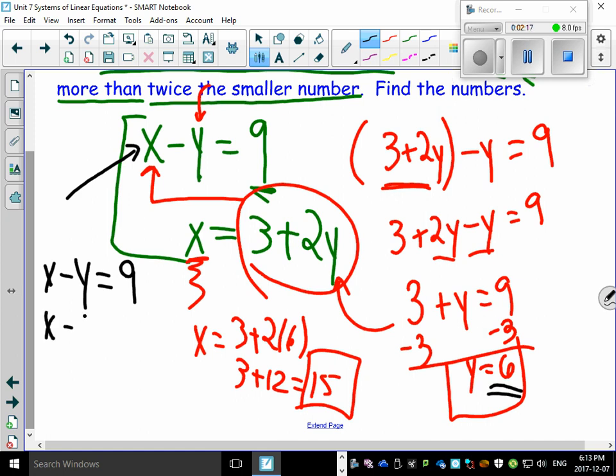X minus six. There's the substitution. Equals to nine. All right. So all I have to do is add six to both sides. Look at this. X still equals to fifteen. So it doesn't matter which equation you substitute it into, but you now know the two numbers. The two numbers are six and fifteen.